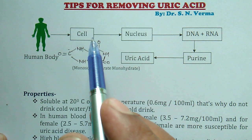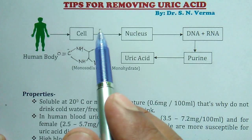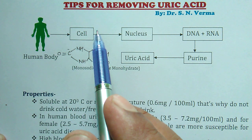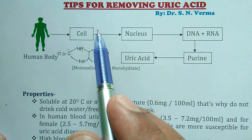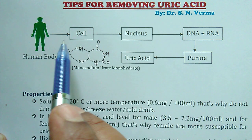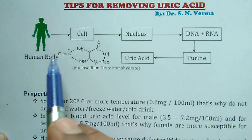Hello friends, good morning. Today we explain the method for removing uric acid from our body, because uric acid affects 10 percent of the population, mostly female and male, by causing joint pain, inflammation, disfiguring of bone, etc.